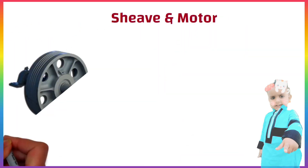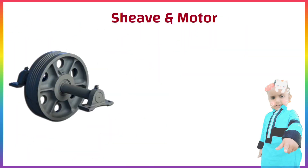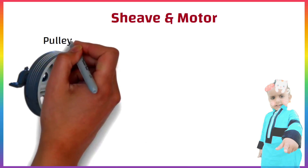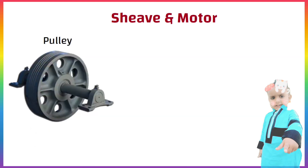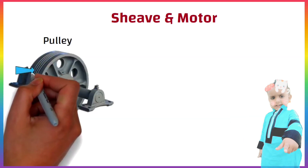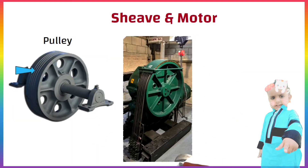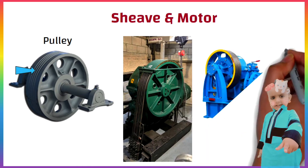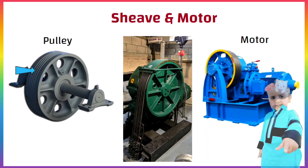Sheave, also known as a pulley, has grooves in it and lets the rope be lifted, raised and lowered. It is the motor that keeps the sheave moving in the correct direction, taking people where they need to go.